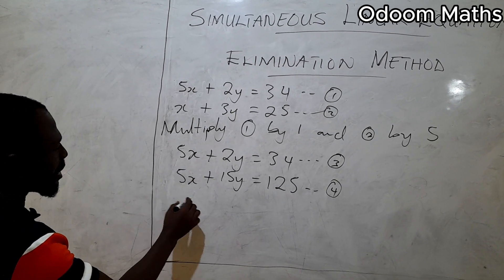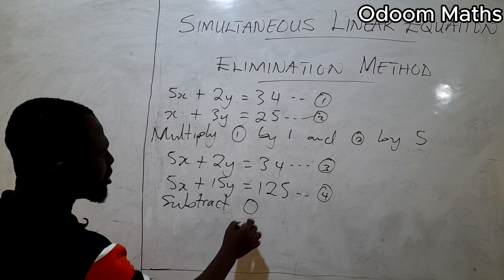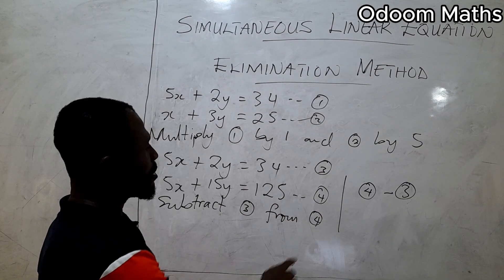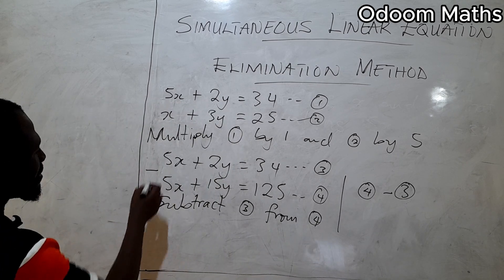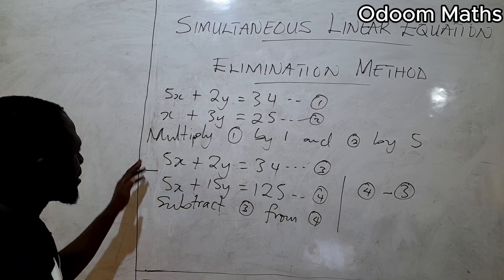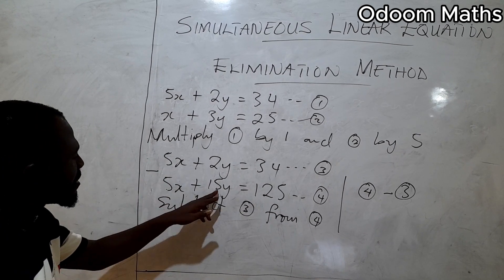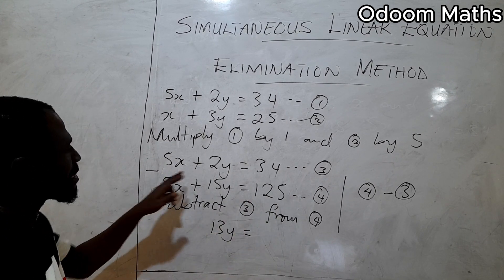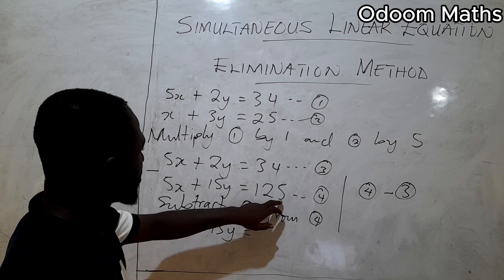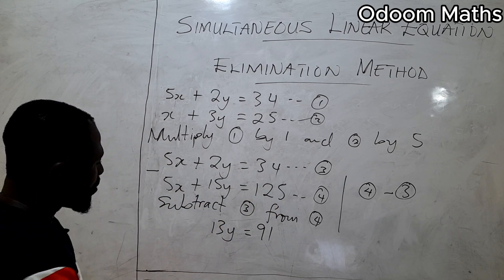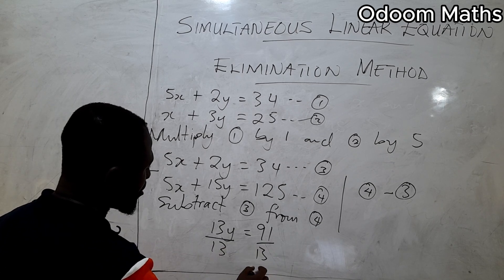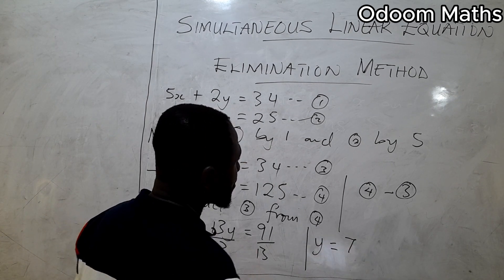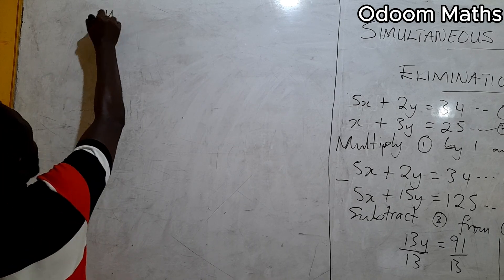We compute equation 4 minus equation 3. 5x minus 5x is 0, so x is eliminated. 15y minus 2y gives 13y. 125 minus 34 gives 91. Dividing both sides by 13, we get y equals 7.